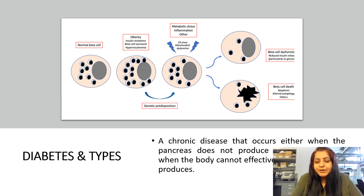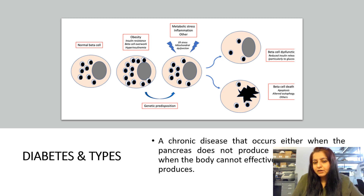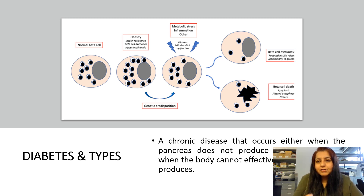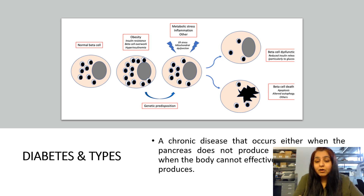In diabetes, beta cells may die due to intrinsic or extrinsic factors — either completely dying or losing their function. When they die or decline in function, insulin is not released from the beta cells, it cannot bind with insulin receptors, the glucose transporter does not travel to the plasma membrane and does not open, and therefore glucose does not enter inside the cell or target tissues.